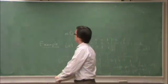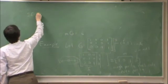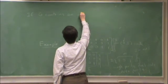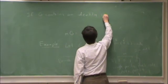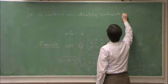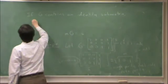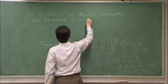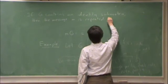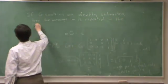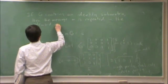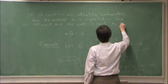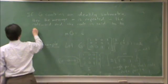So as a bit of terminology, if G contains an identity submatrix, then it would be an identity submatrix. So the message m is repeated in the code word, and the code is said to be systematic. I'm not sure why they call it systematic, but that's just the term we use.